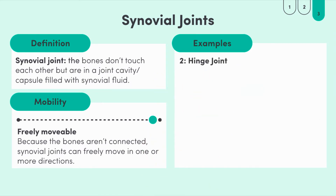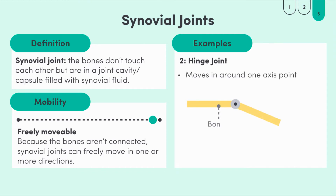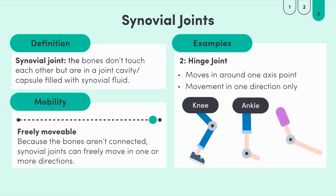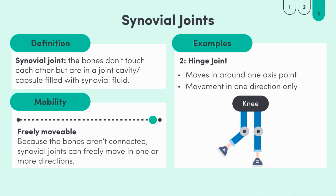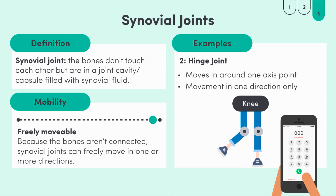Next let's look at hinge joints. These joints are named after their structure — they're exactly like a hinge on a door. Bones within this type of joint can only move along one axis, meaning they can only move in one line, exactly what a door does — only open and close. Some examples of hinge joints are the knee joint, the ankle joint and the elbow joint. Our knees only move in one plane: they bend and straighten.